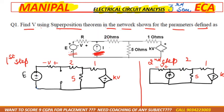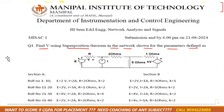To summarize: in the first step, take the first source and deactivate all other sources. In the second step, take the second source and deactivate all other sources. Since there are two sources, this question is solved in two steps. The parameter values are: e = 2 volts, i = 2 amperes, r = 1 ohm, k = 2.